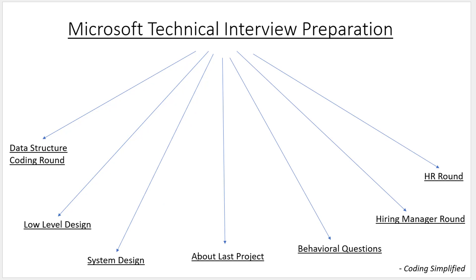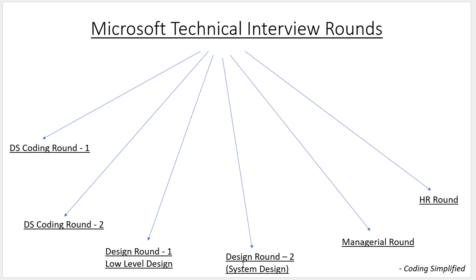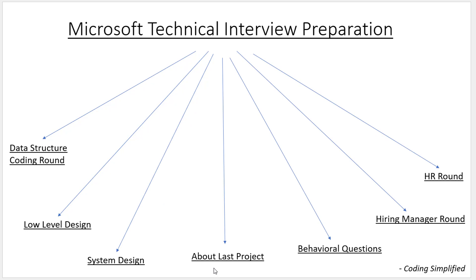The hiring manager will ask about your last project — what you're currently working on — because if you've done great work at your current company, there's a high probability it will benefit Microsoft too. They want to assess the quality of your work. Note that your last project can come up in any round, since it's often part of 'tell me about yourself.'